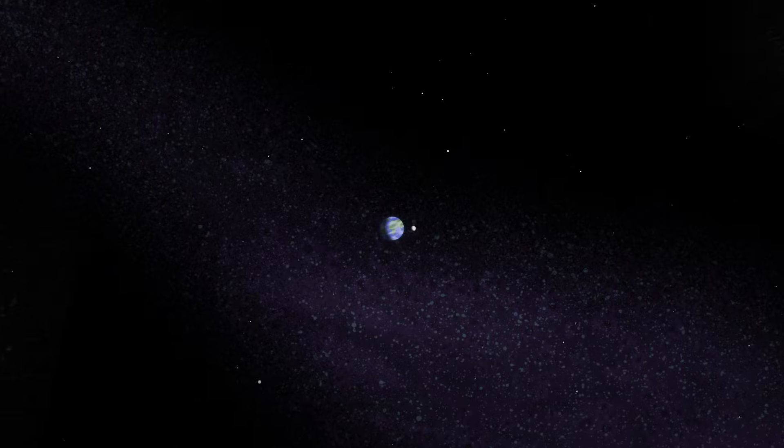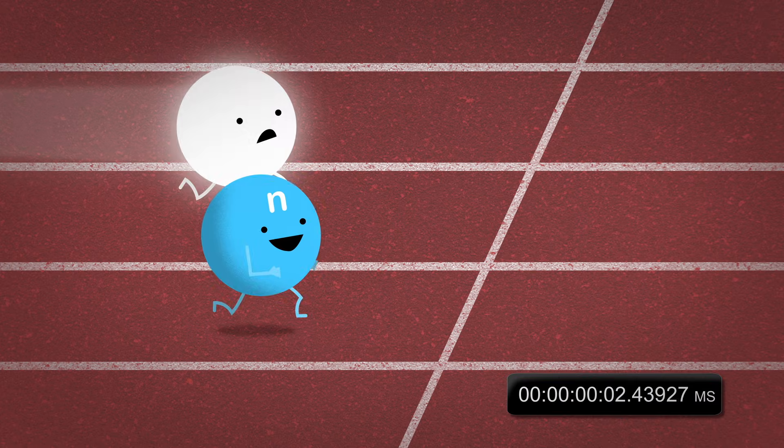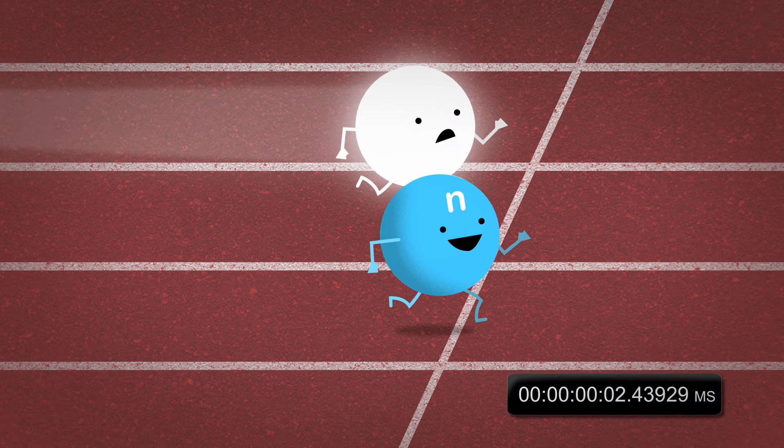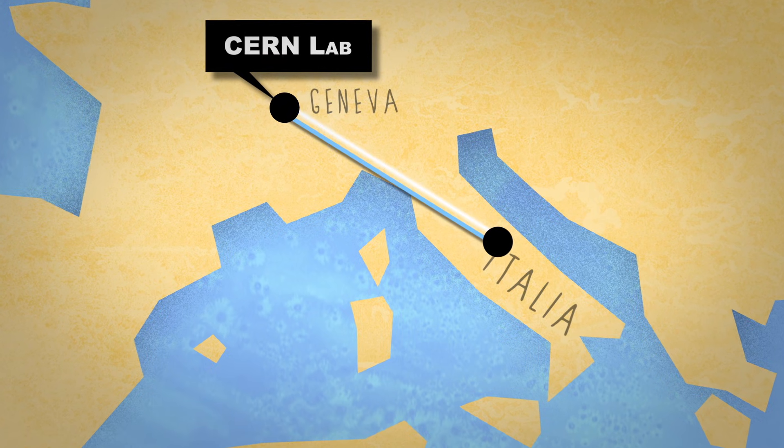In 2011, a team of physicists reported a startling discovery. Neutrinos traveled faster than the speed of light by 60 billionths of a second in their 730-kilometer trip from Geneva to a detector in Italy.